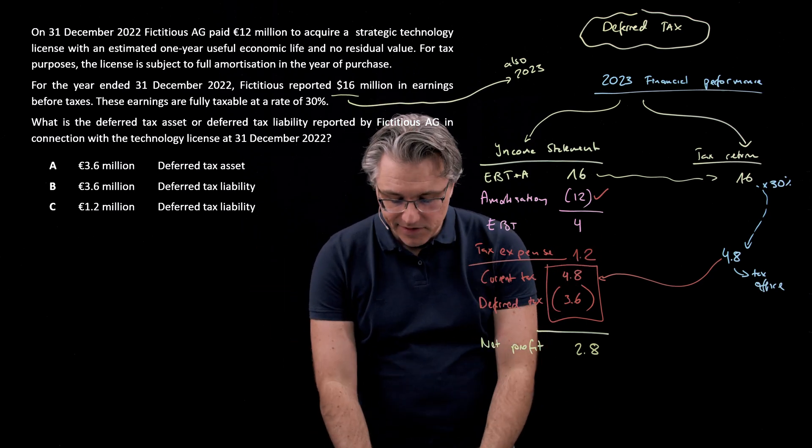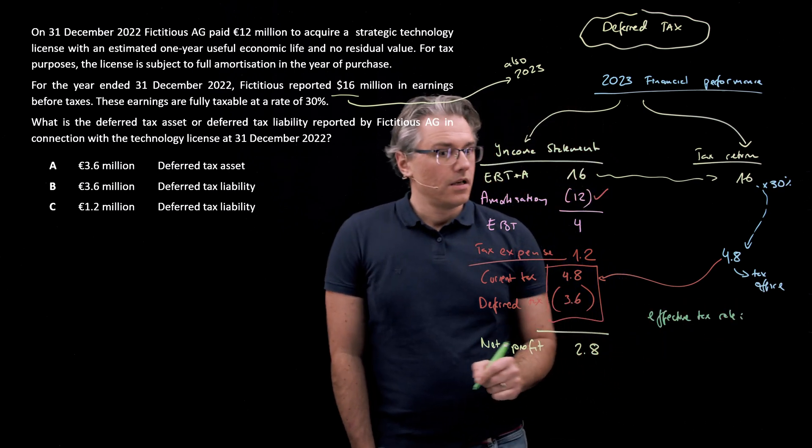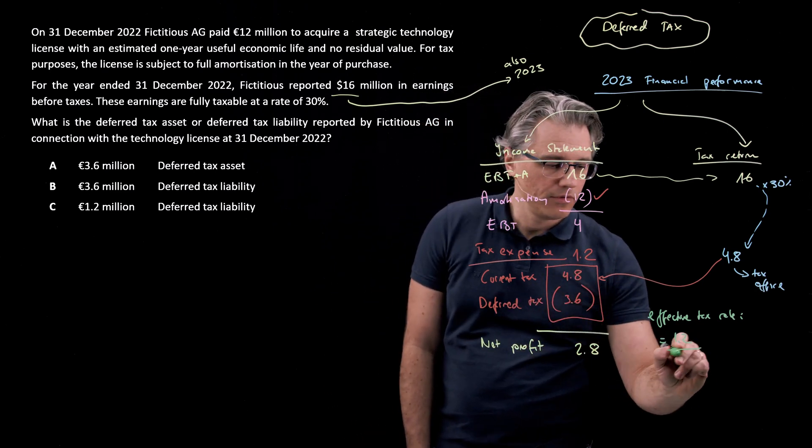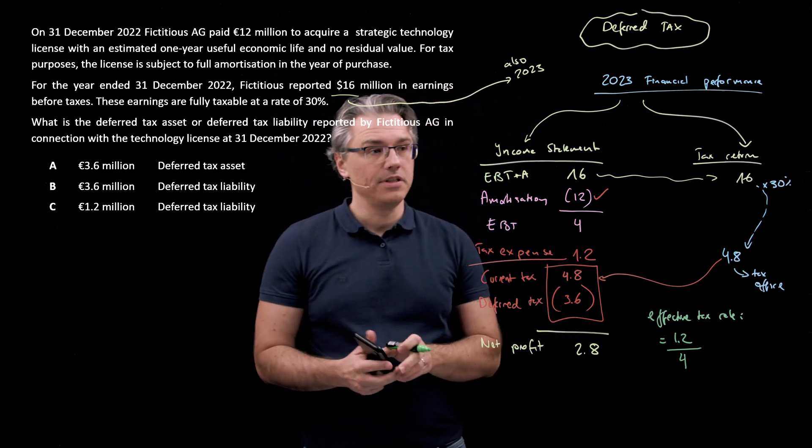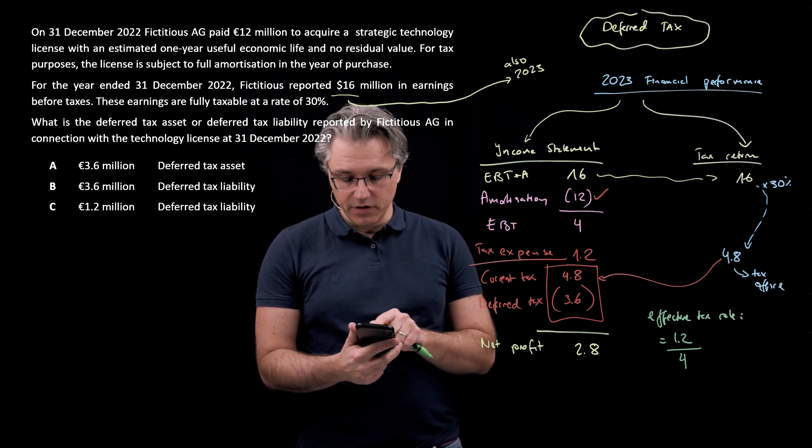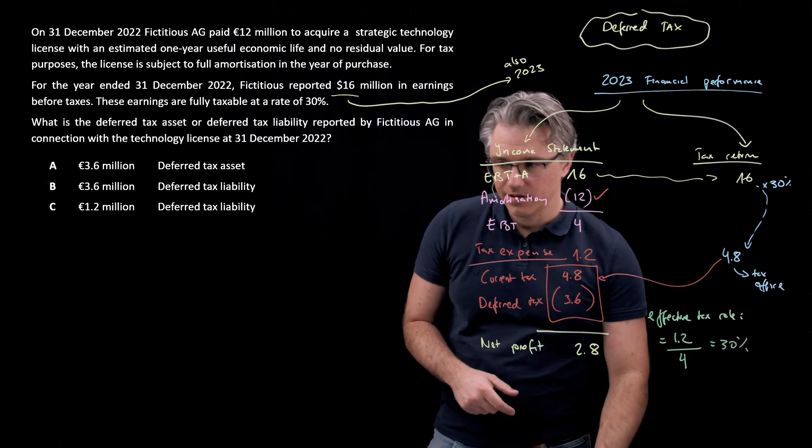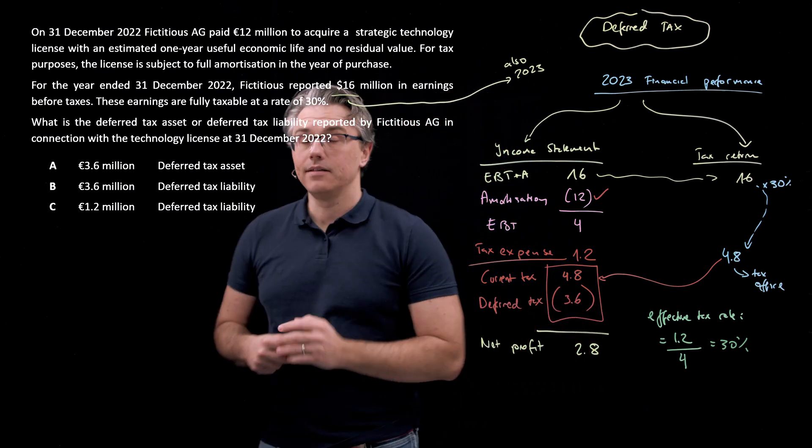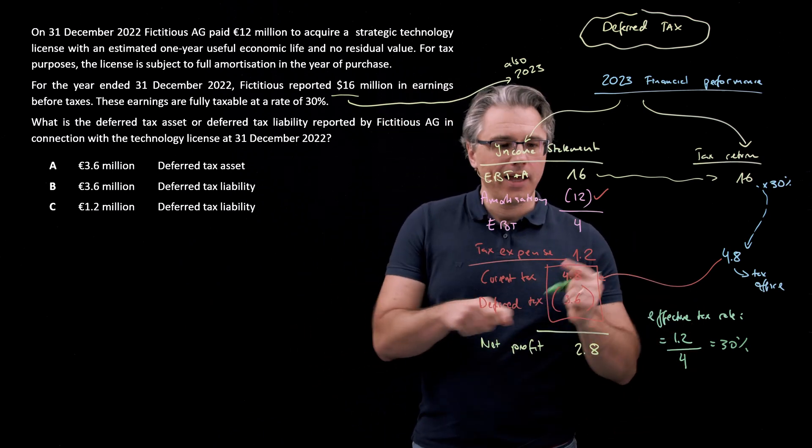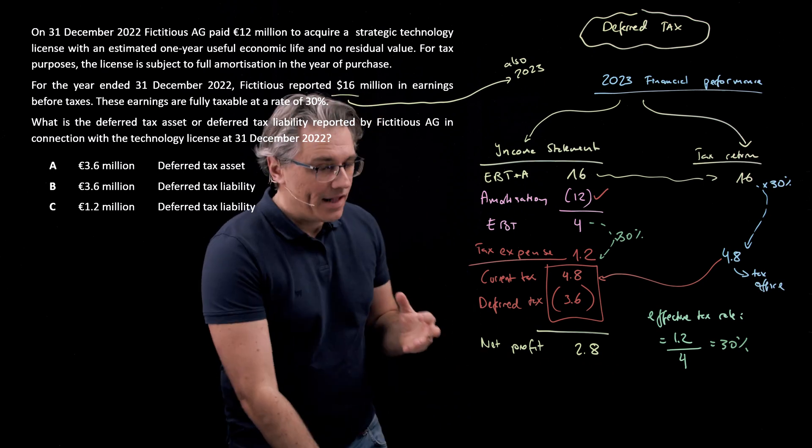Therefore, our net profit for the period is going to be 4 of earnings before tax, less 1.2 of tax expense, which obviously gives just 2.8 million of net profit. And in line with what I've been doing so far in all of the videos, I want to compute the effective tax rate. So the comparison or the relation of the reported tax expense, 1.2, and whatever was our EBT, and that was 4. So let me fire up the calculator here on my phone. 1.2 divided by 4, 0.3 or 30% again. So the whole effect of doing this has been to once again equate the tax expense with what would happen if you simply charged 30% the statutory tax rate to EBT.